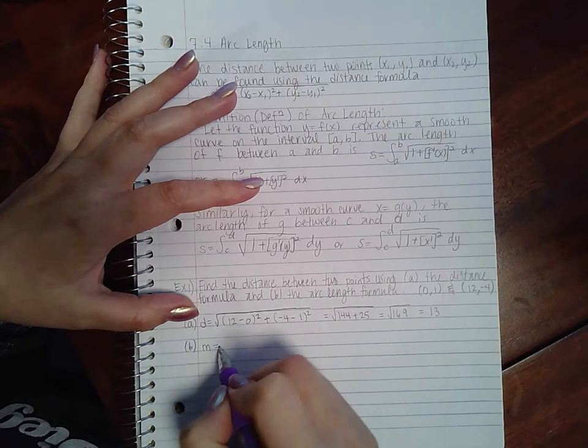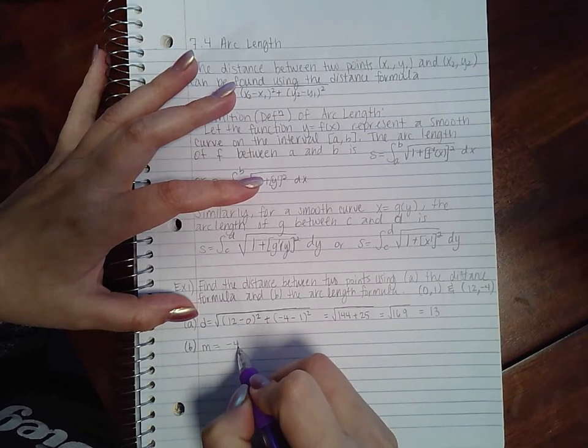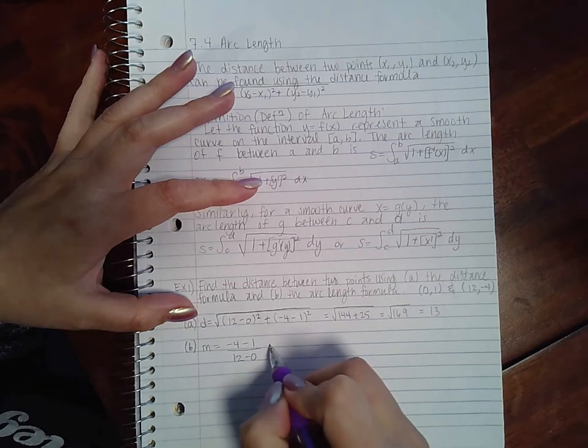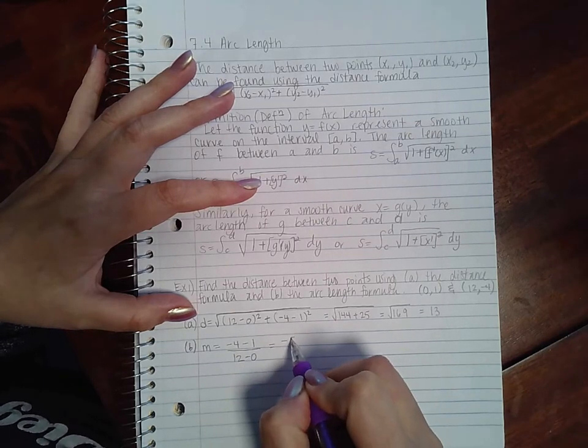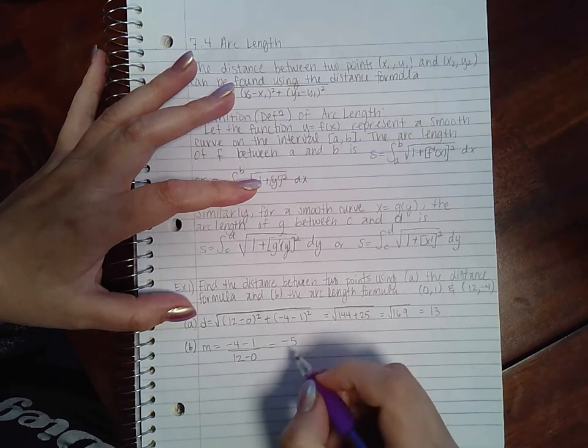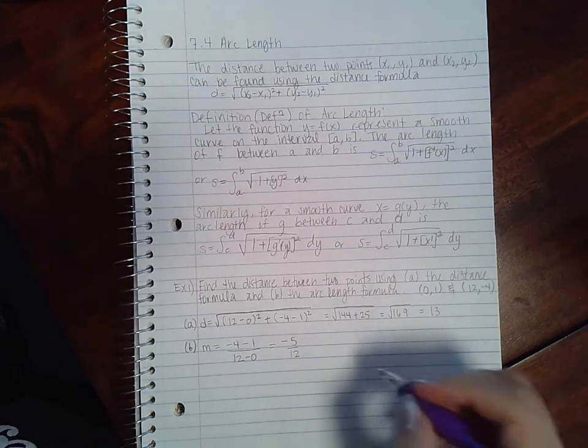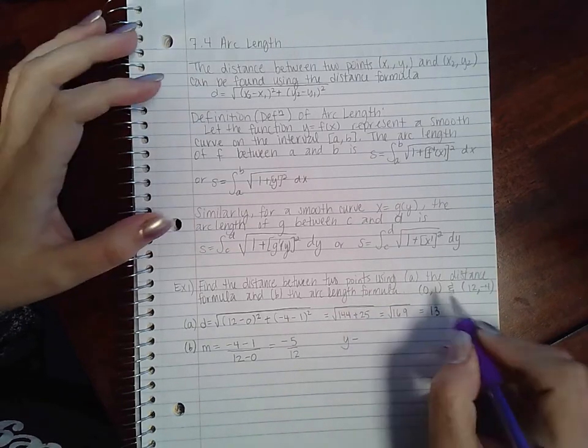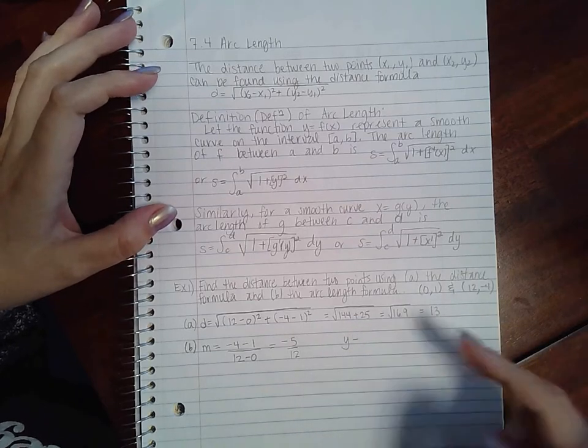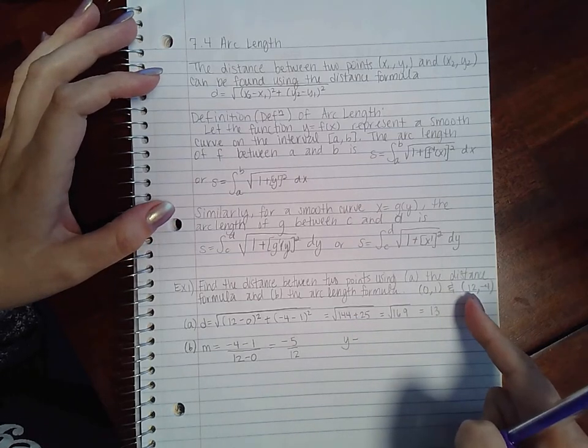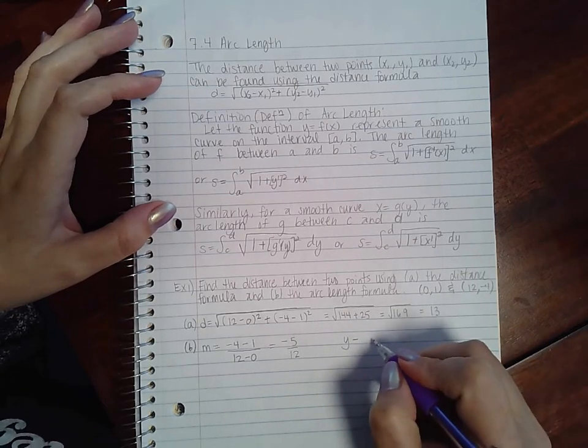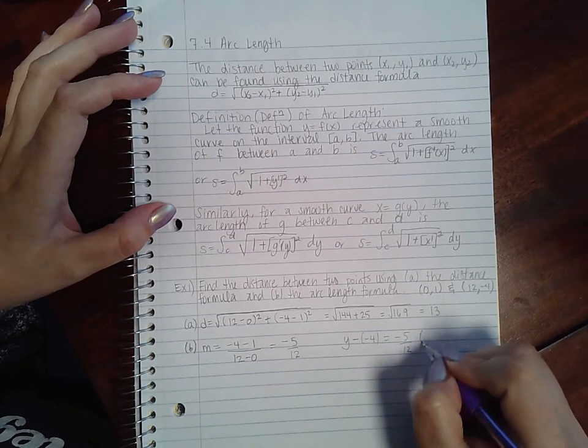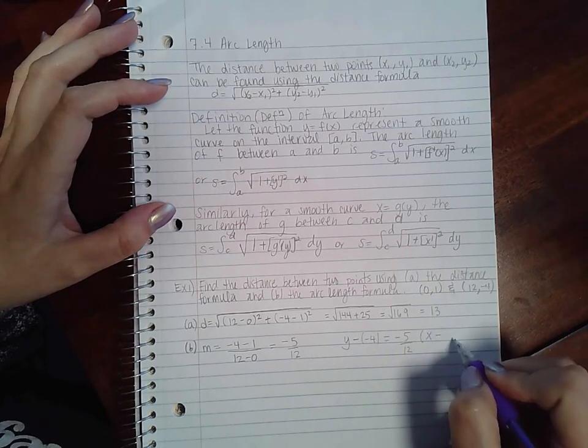y2 minus y1 over x2 minus x1, that could help me figure out what is the equation of this line. So y minus, I'm going to use this point because it's a little bit easier, so y minus -4 equals -5/12 times x minus 12.